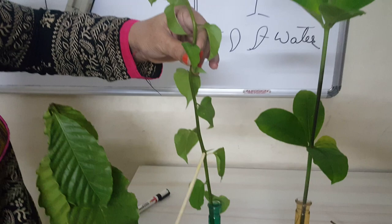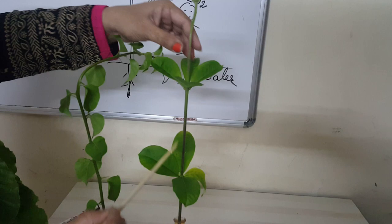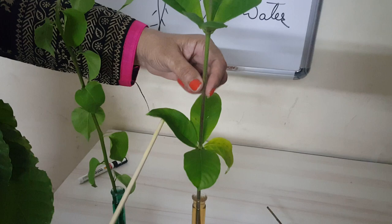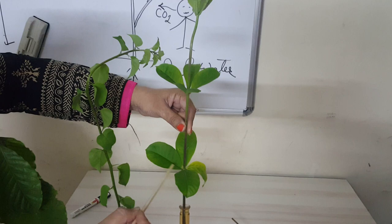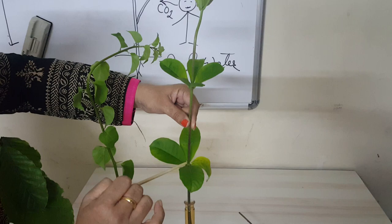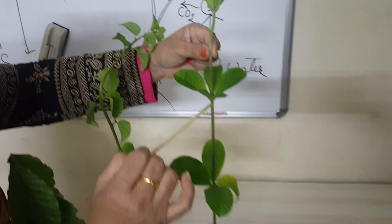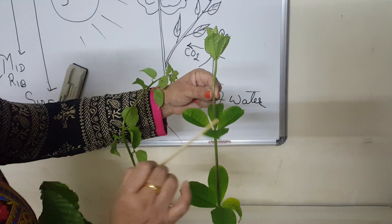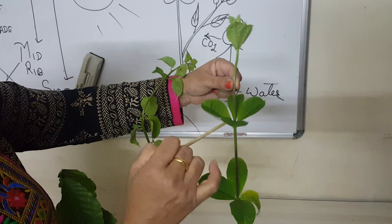Moving on to the third arrangement: from one node, you could see one, two, three, four leaves arising from the same single node. All these leaves are in a circle, in a whorl. This type of arrangement is known as the arrangement of leaves in a whorl. This is one node, this is another node, and the distance between both nodes is the inter-node. Two or more leaves arise from the same node and they are arranged in a whorl.